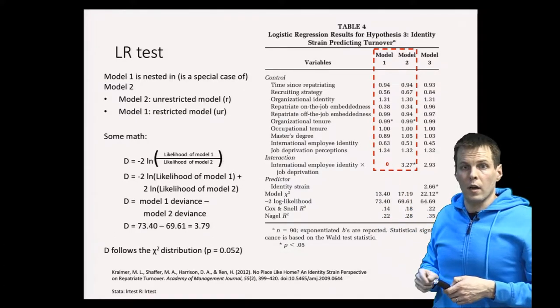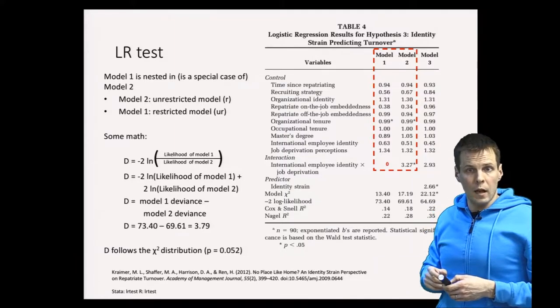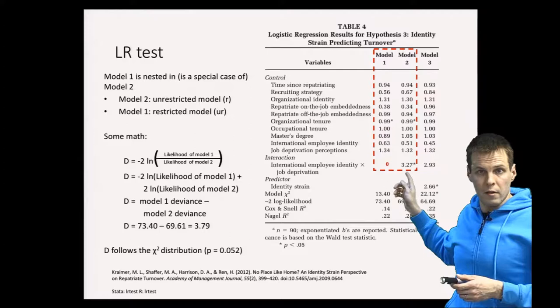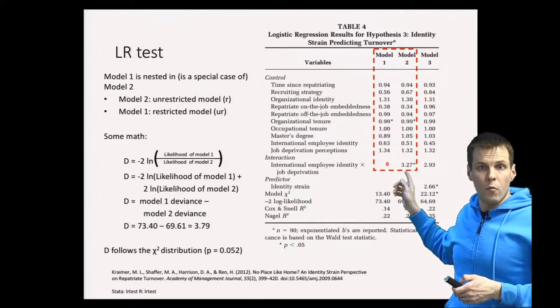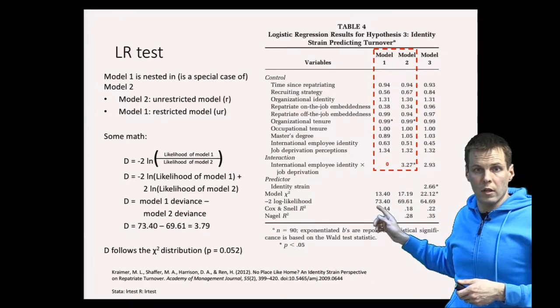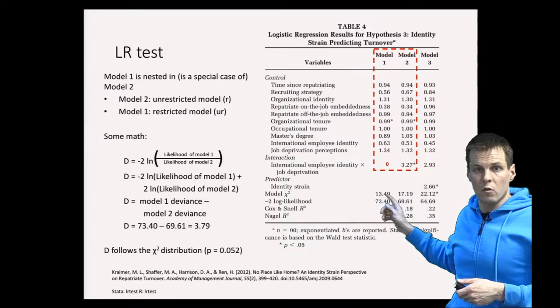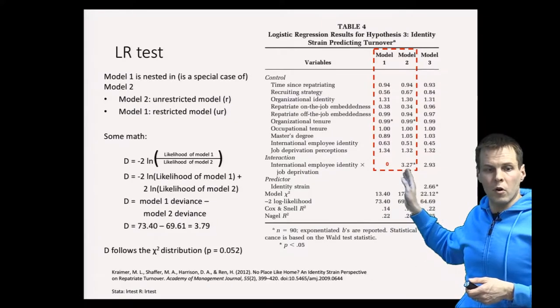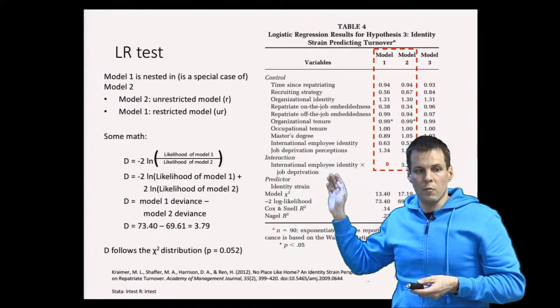Then we can calculate the likelihood ratio test of whether adding this one more parameter increases the model fit more than what can be expected by chance only, by comparing these deviances or minus two times log-likelihood. So model 2 is the unrestricted model. Model 1 is the restricted model.